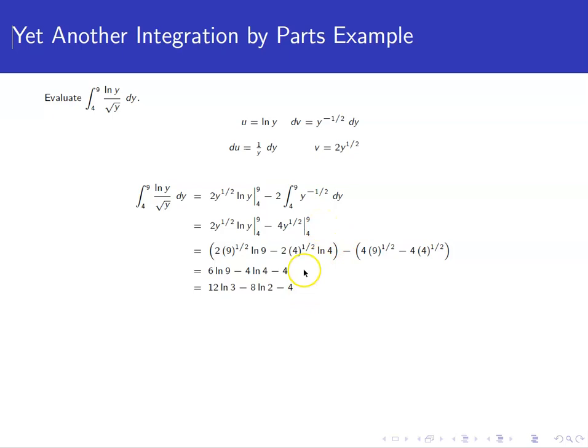If you go through your arithmetic and apply some properties of logs, you can get to a final answer of 12 natural log of 3 minus 8 log 2 minus 4.